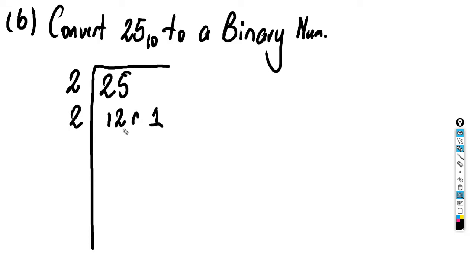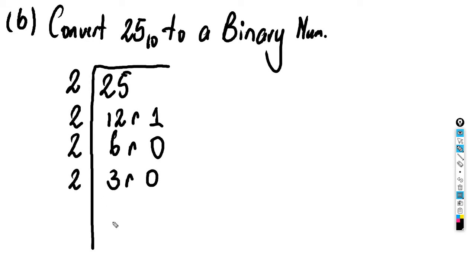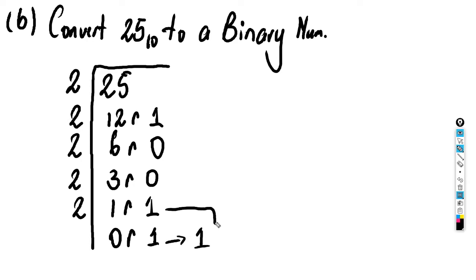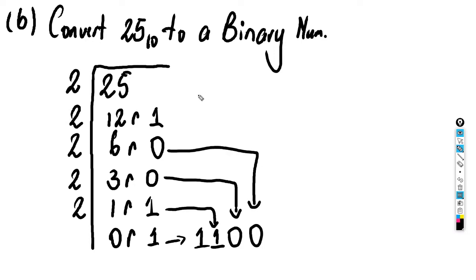Then two can divide 12 without leaving a remainder — you get six and the remainder is zero. Two can go into six as well without leaving a remainder, so you get three and the remainder is zero. Then you divide three by two and you actually get a remainder — you're going to end up with one remainder one. Then the last one is one divided by two and you get zero remainder one.